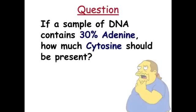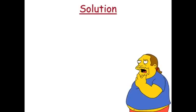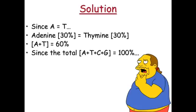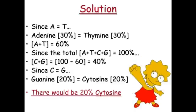Here's a question: if a sample of DNA has 30% adenine, how much cytosine should be present? Since A equals T, if A is 30%, then thymine must also be 30%. That accounts for 60% of the total, so C and G together must make 40%. Since C equals G, guanine is 20% and cytosine is also 20%. You can expect to see questions like that on some tests and quizzes in the near future.